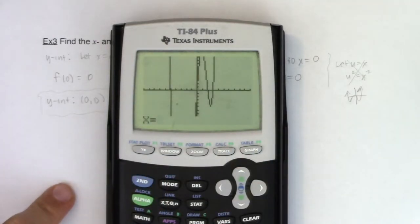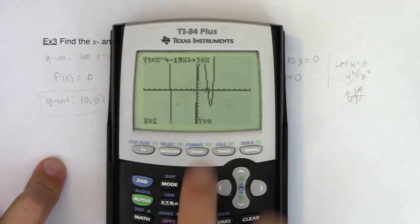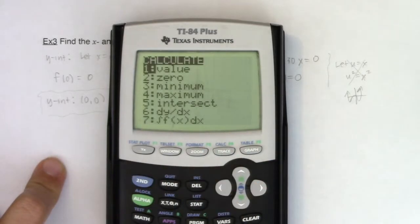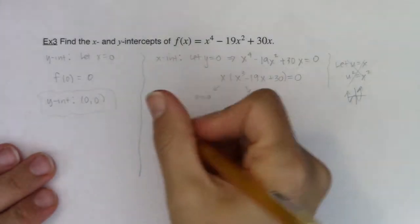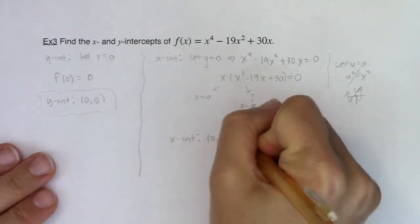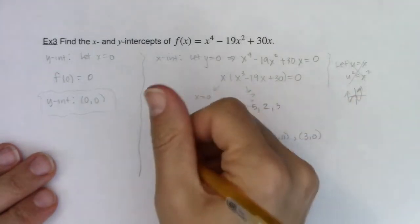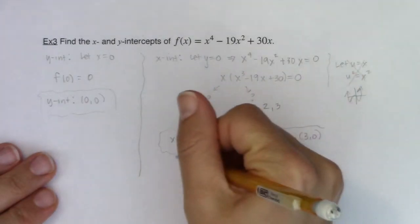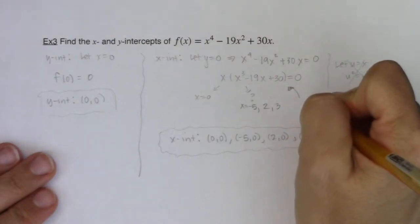Now if I wanted to confirm this in a different way, I could have hit second trace, I could have hit option one, and then just plugged in negative five since that was my guess. I see the y value zero, so that one's solid. I could plug in number two, or x equaling two, I get a y equaling zero, it confirms that's an x-intercept, and I could have plugged in three and gotten that zero back out. So that's just a different way to check for x-intercepts. Alright, but going through this, my x-intercepts now, I remember that they are ordered pairs, so I have one at (0, 0), (-5, 0), (2, 0), and (3, 0). Alright, so here are my x-intercepts.